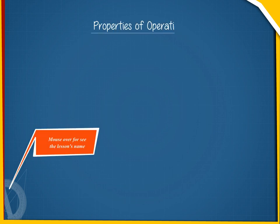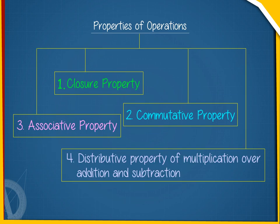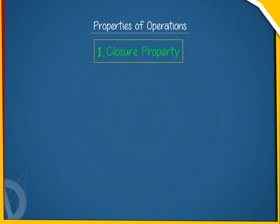Properties of operations. There are different properties of operations for rational numbers. 1. Closure property: For rational numbers x and y, x plus y, x minus y, x multiplied by y, and x divided by y will also be rational numbers.